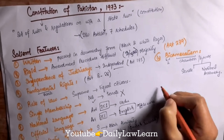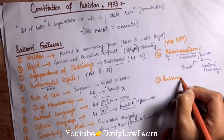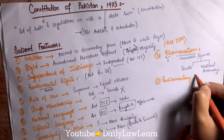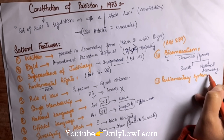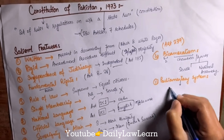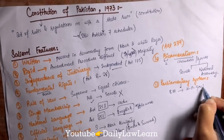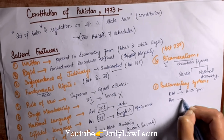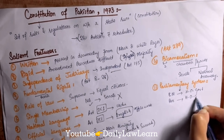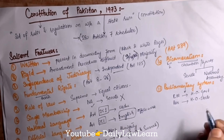Next is bicameralism — 'bi' means two and 'cameralism' means chambers or houses. There are two chambers of parliament: one is the Senate and the other is the National Assembly. Next is the parliamentary system. In Pakistan there is a parliamentary form of government, meaning the Prime Minister is the head of government while the President is the head of state.